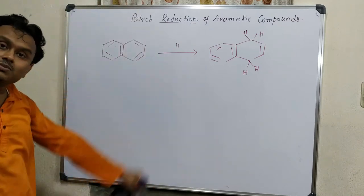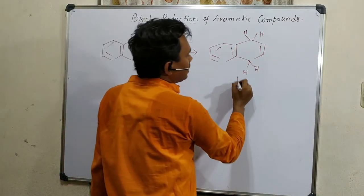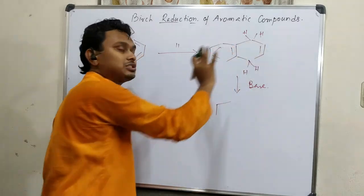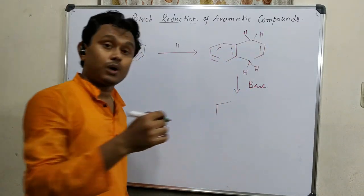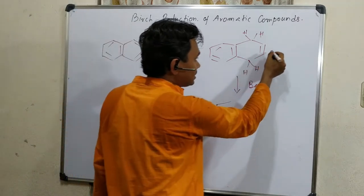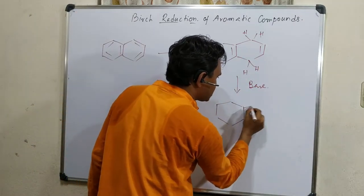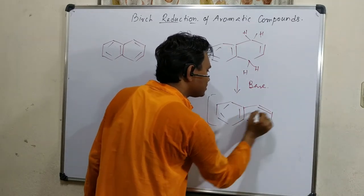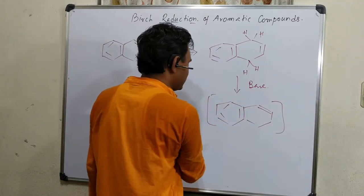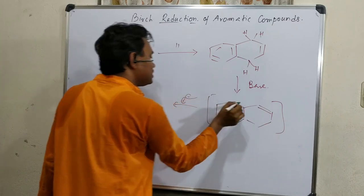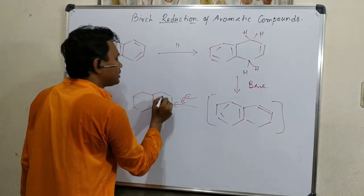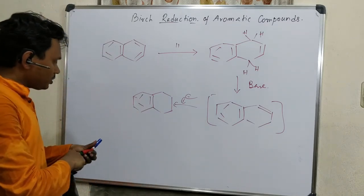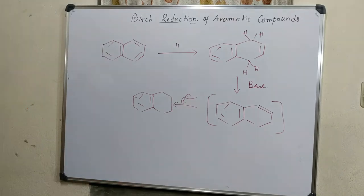So this is another example of Birch reduction on polycyclic aromatic hydrocarbons. Please keep in mind that controlled Birch reduction produces single-ring reduction. If we take more reducing agent — for example sodium in liquid ammonia and ethanol — it may reduce the other ring also. Using limited amounts of reagent under the same conditions, it produces the mono-reduced product. If we want further reduction, using sodium and liquid ammonia with ethanol, the naphthalene intermediate can be further reduced.